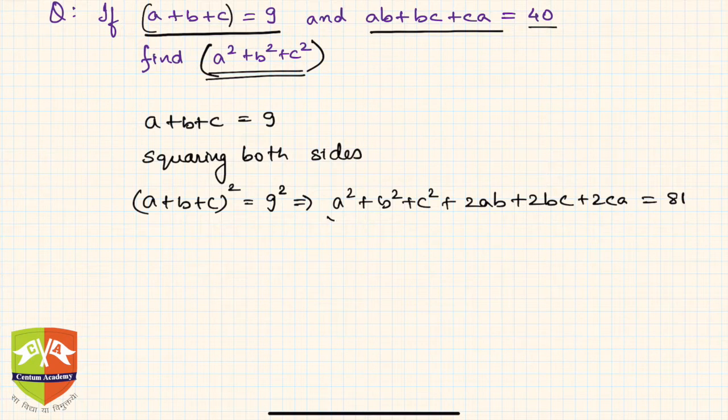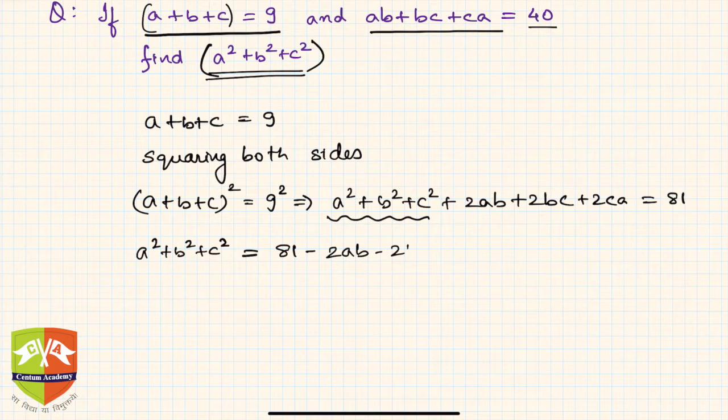Now if you notice, this is what we are expected to find: a square plus b square plus c square. So can I not write a square plus b square plus c square is equal to 81 minus 2ab minus 2bc minus 2ca. So if you see, this is nothing but 81 minus...